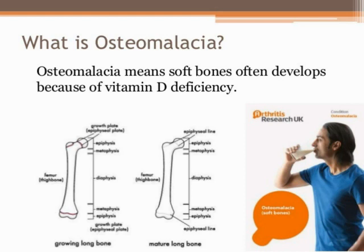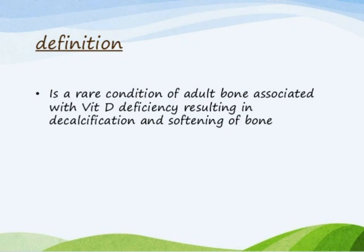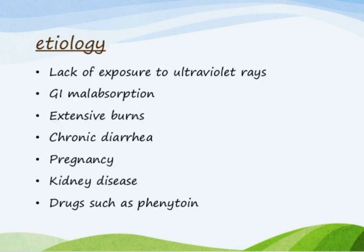Osteomalacia can be seen in both conditions. By definition, it is a rare condition of adult bone associated with vitamin D deficiency, resulting in decalcification and softening of the bone. In osteomalacia, decalcification occurs first and is followed by softening of the bone.